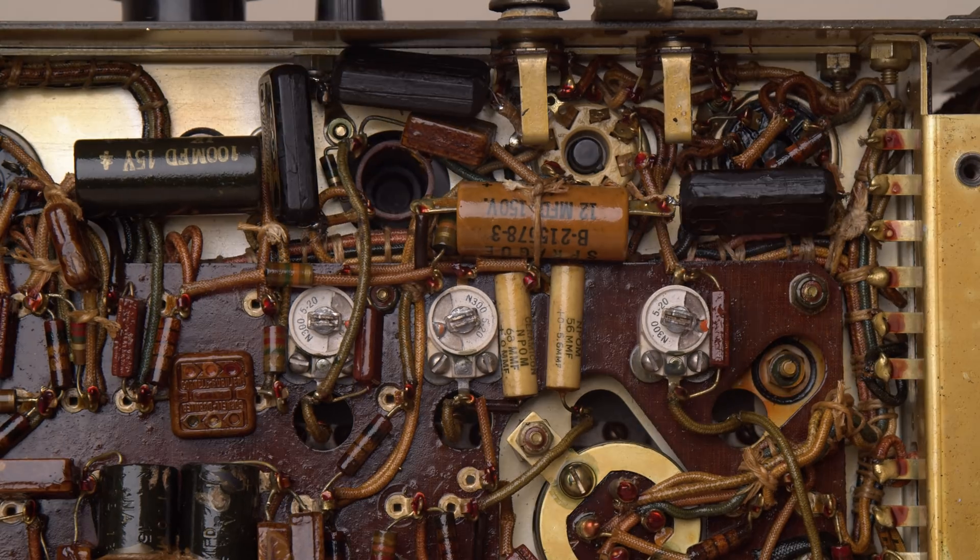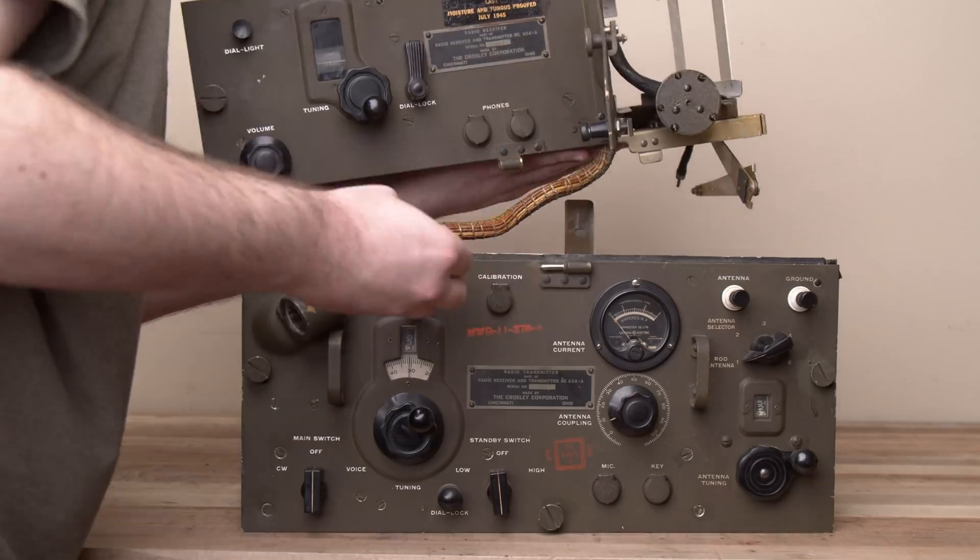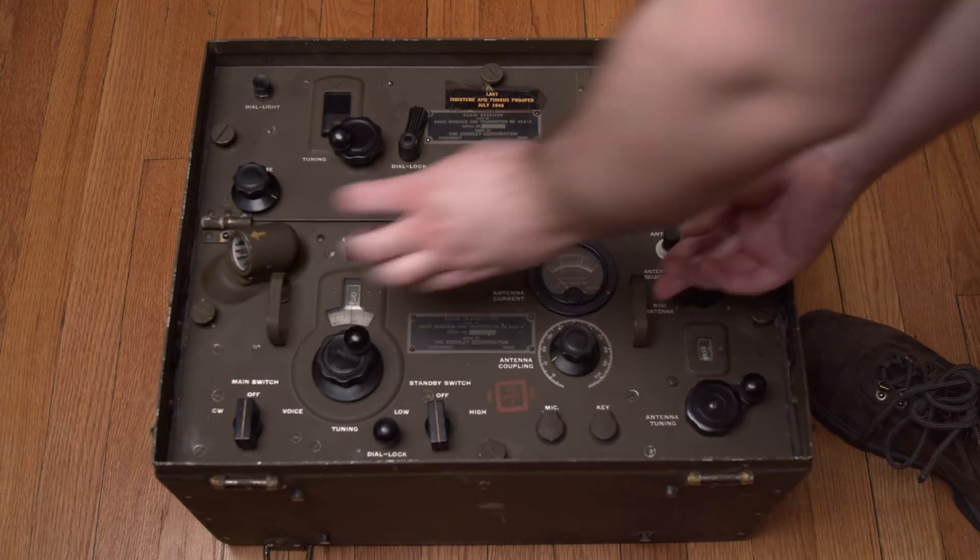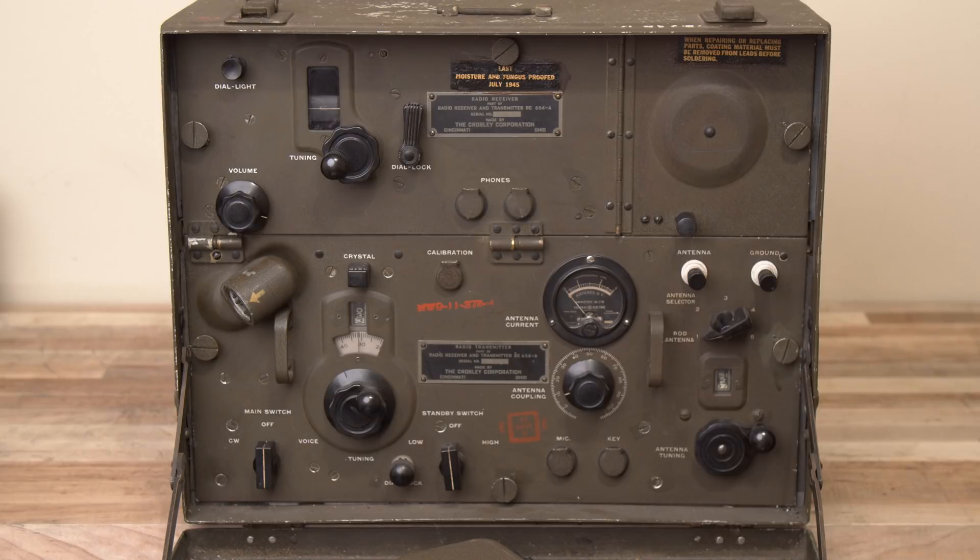Once all the caps were back in the circuit, I assembled the receiver case, restored the connections between modules, and returned the radio to its enclosure. With a working power supply and fresh capacitors in place, I was getting close to testing the receiver.